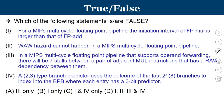Here we have a few statements and we have to identify which of them are false. For a MIPS multi-cycle floating point pipeline, the initiation interval of floating point mult is larger than that of floating point add. The second statement: WAW hazard cannot happen on a MIPS multi-cycle floating point pipeline. Third: in a MIPS multi-cycle floating point pipeline that supports operand forwarding, there would be 7 stalls between a pair of adjacent multiplication instructions with a RAW dependency. The fourth: a 2,3-type branch predictor uses the outcome of the last 2^3 (8) branches to index into the branch prediction buffer, where each entry has a 3-bit predictor.